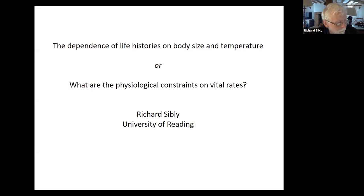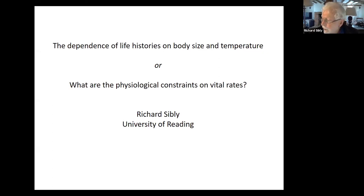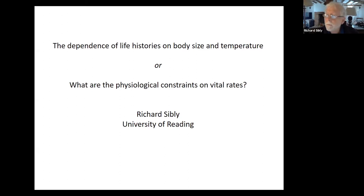I was initially asked to talk on the dependence of life histories on body size and temperature. But this raises the question: what are the physiological constraints on vital rates? Why can't we grow faster? Why can't we have more offspring? Why can't we live for longer? What's stopping us? It's something physiological in part. So, what are the physiological constraints? That's the major theme of the talk.